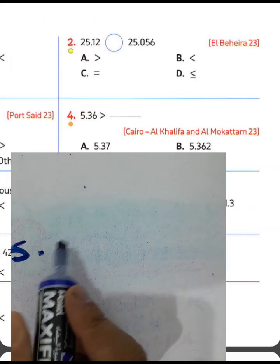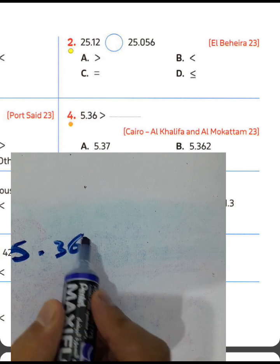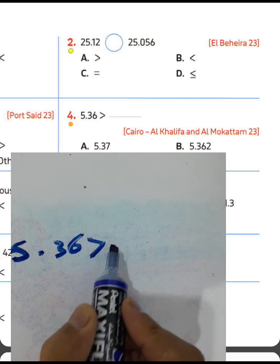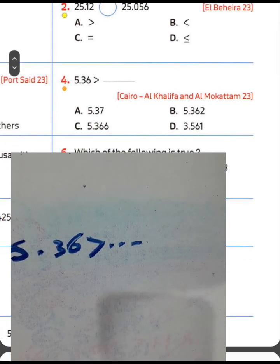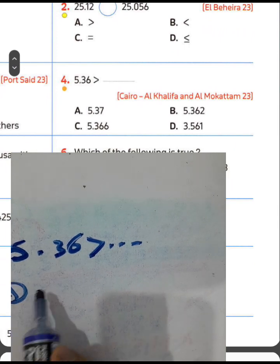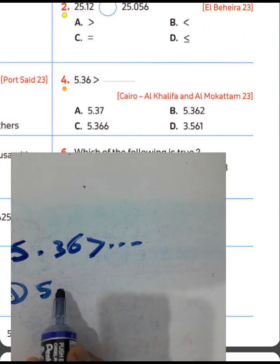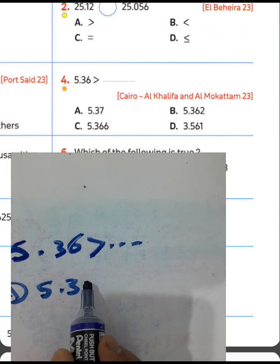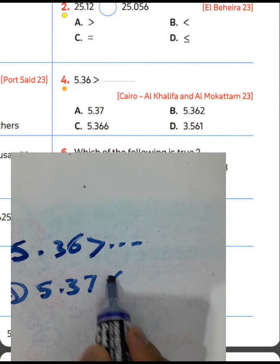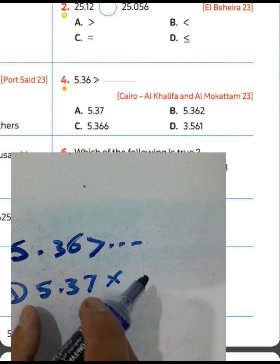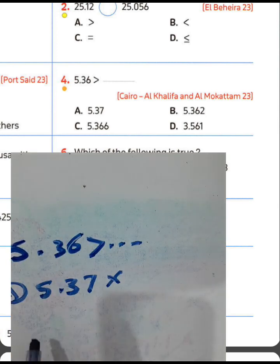Question number four: 5.36 is greater than what? Look at letter A: 5.37 — that's false because 5.37 is greater than 5.36, not less. Letter B is also false because that number is greater as well.